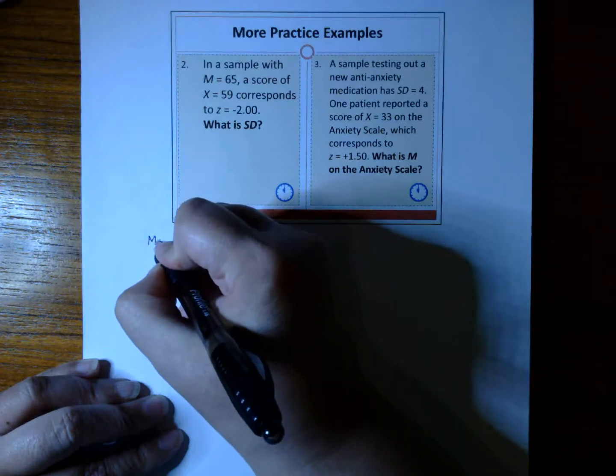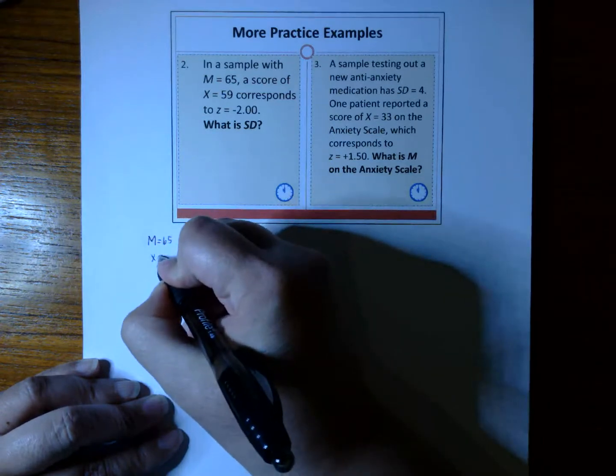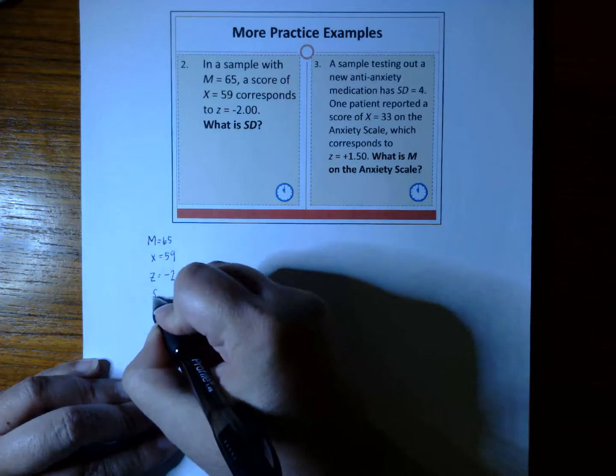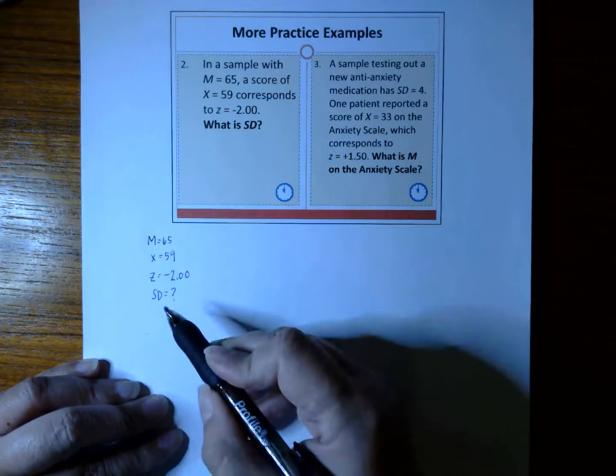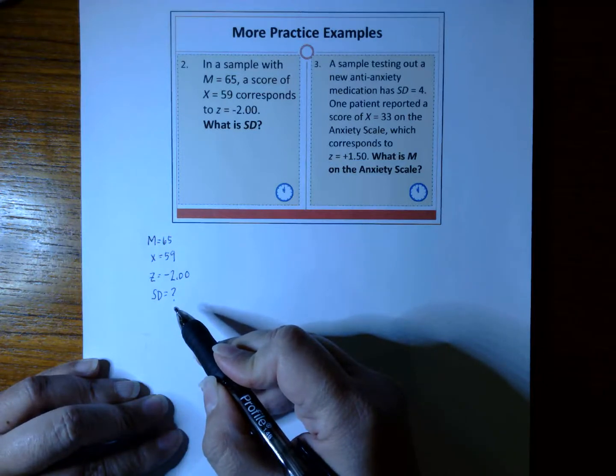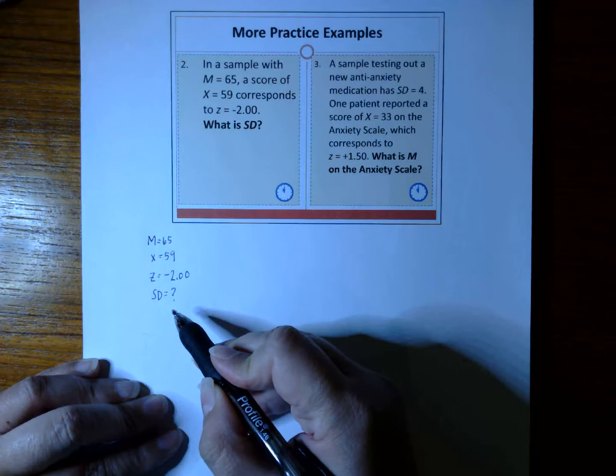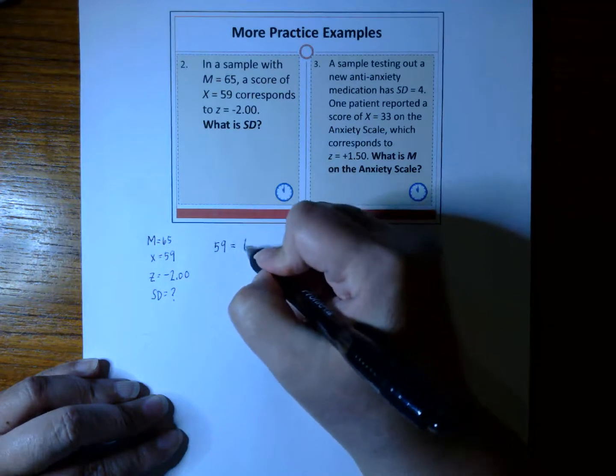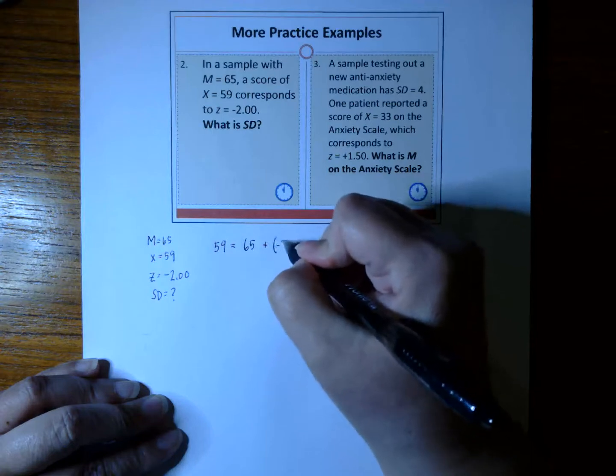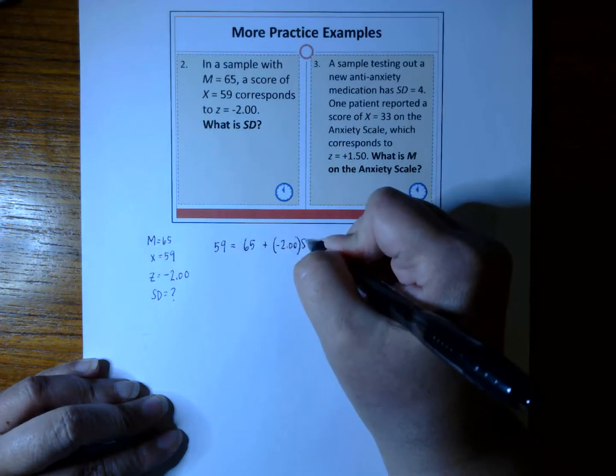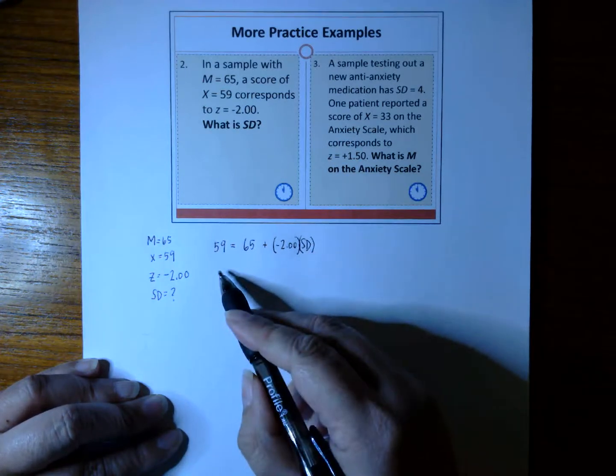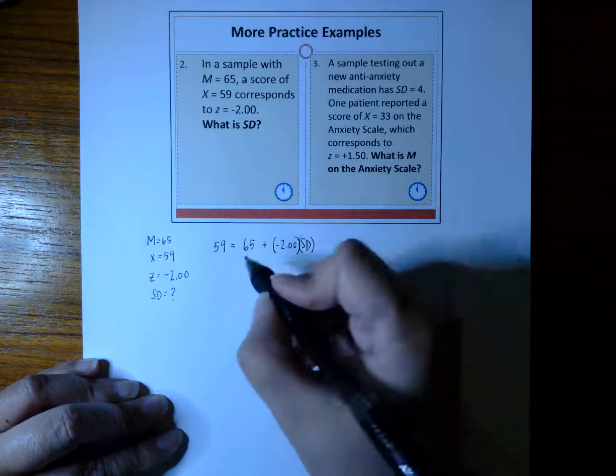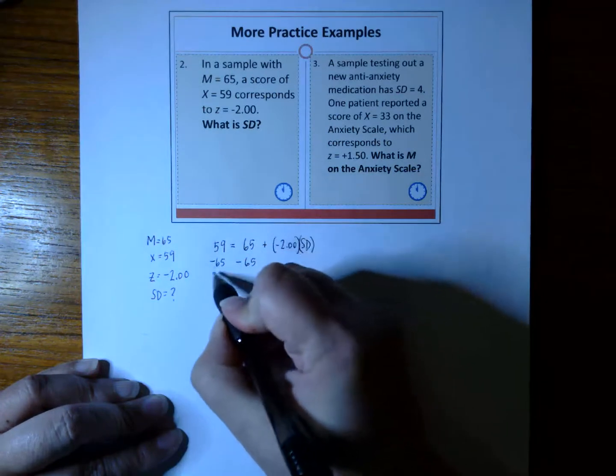With this question, we have a mean of 65 with an X-score of 59. This corresponds with a Z-score of a negative 2, and they want to know what the standard deviation is. Let's use the previous formula. We're just going to plug in the numbers. 59 equals 65 plus negative 2 times SD. That's a lot of numbers there. Where do we start? Well, let's get everything over to the left side. So we just have SD. Let's subtract 65 from both sides.